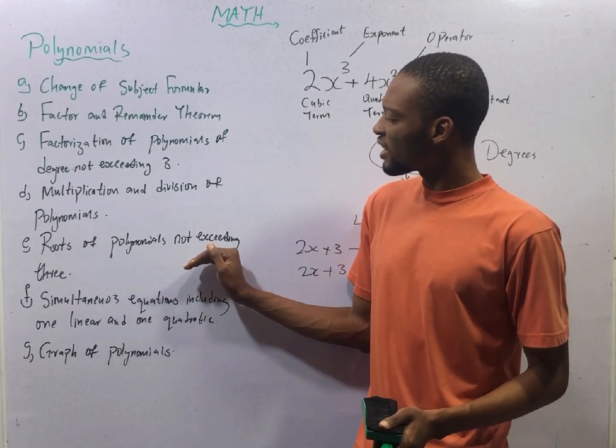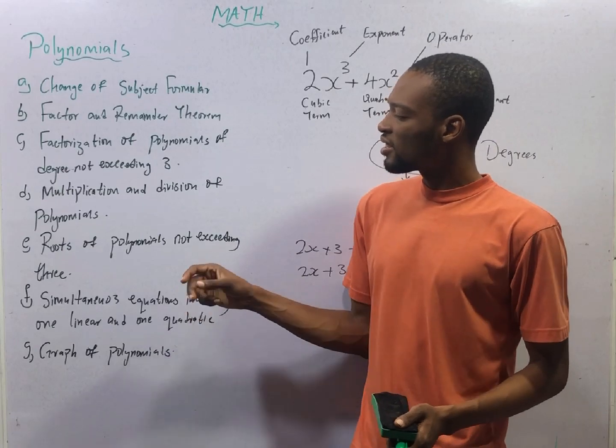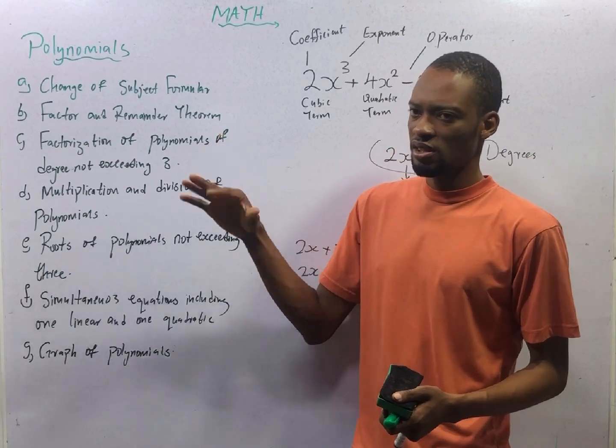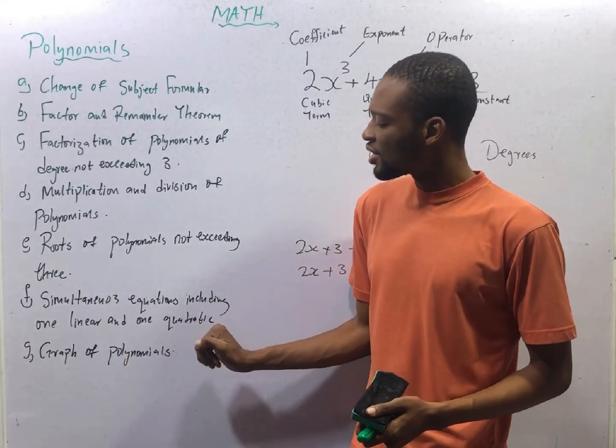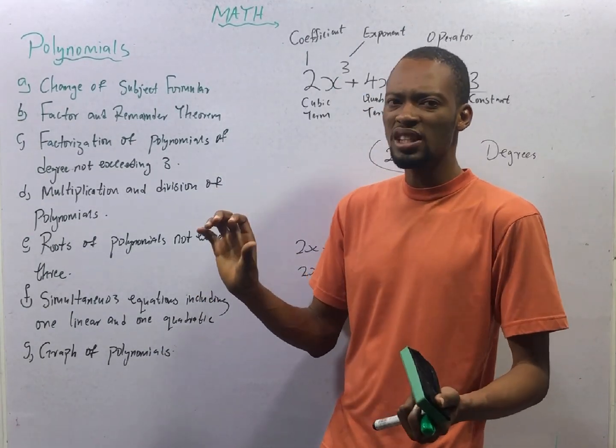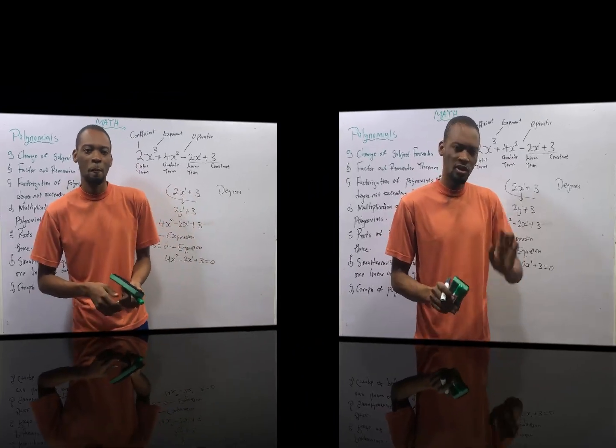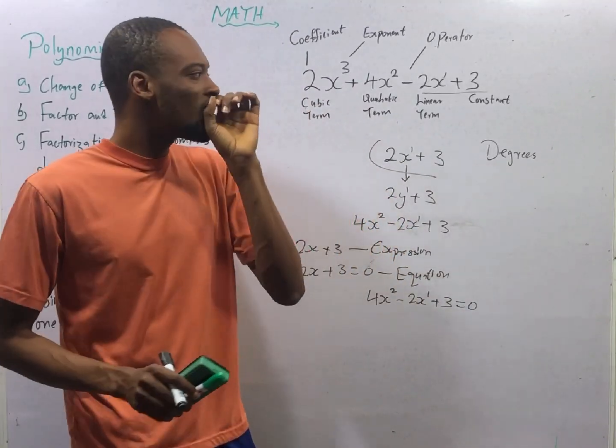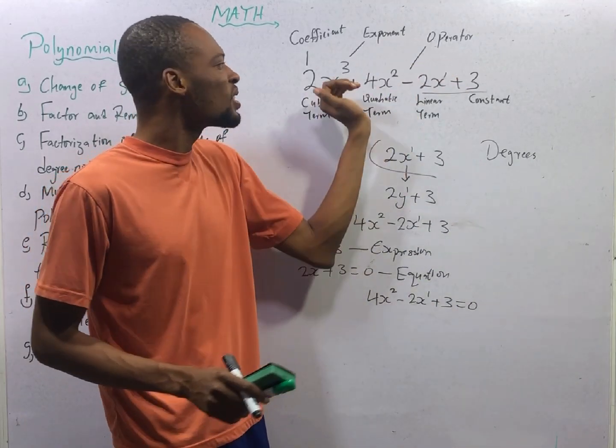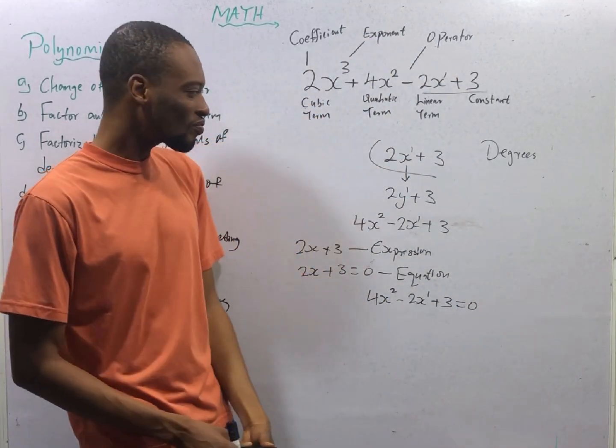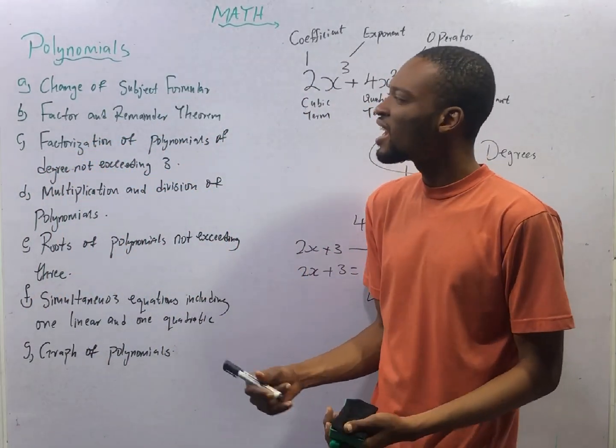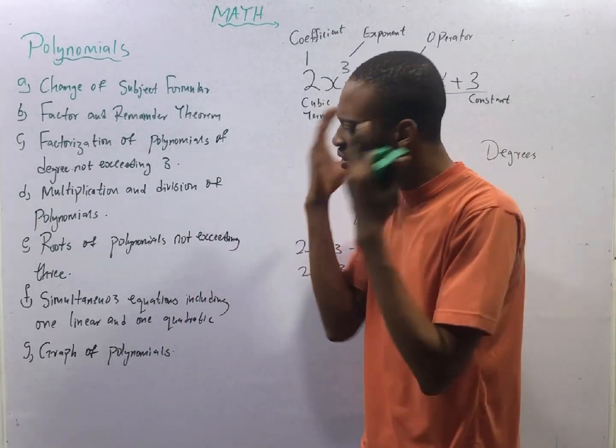Roots of polynomials not exceeding 3 - if the power or the degree is 2, that is quadratic; 3, that is cubic. G, graph of polynomials - basically, how to interpret graphs of quadratic equations and expressions. So long JAMB is concerned, you are not to know any polynomial with degree more than 3. Polynomial is a very interesting topic, and I will make sure I teach it the way you will understand it.